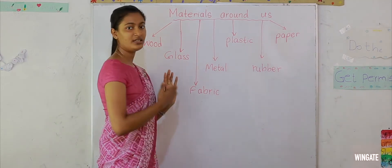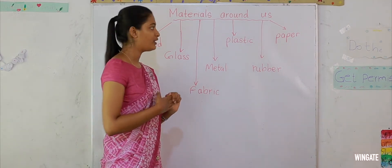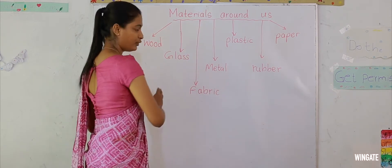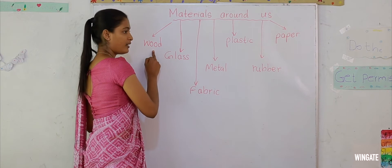So these are the materials around us. Objects are made from these materials. Let's go through again. Wood.